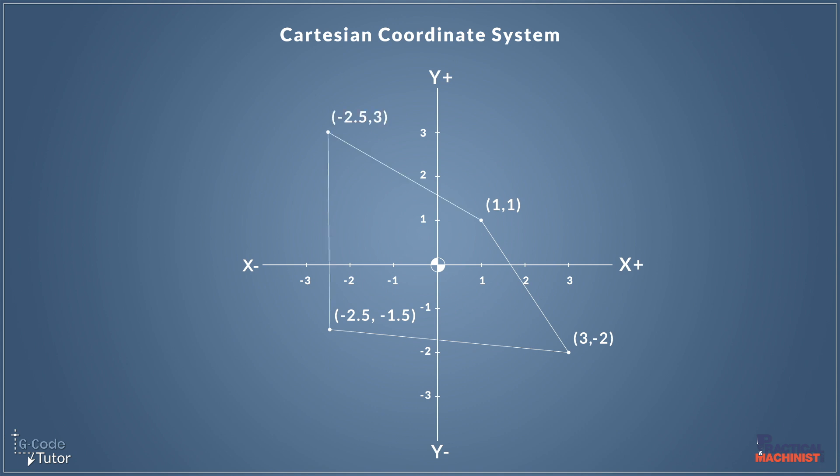And then finally, at the top here, we have X minus 2.5 and Y plus three because we're coming up in the Y-axis. So that's given us a rough shape that we've plotted on our graph here.